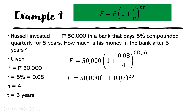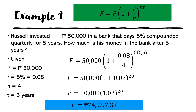Performing the operation inside the parentheses, 1 plus 0.02 gives 1.02, raised to 20. Using your calculator, key in 1.02 raised to 20, then multiply by 50,000. This gives us 74,297.37. Thus the amount of money in the bank after five years is P74,297.37.